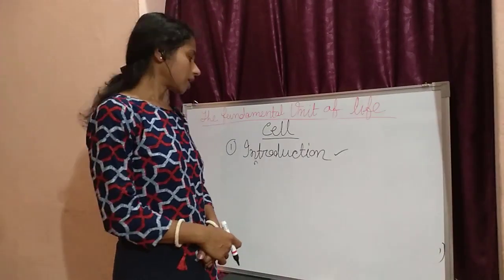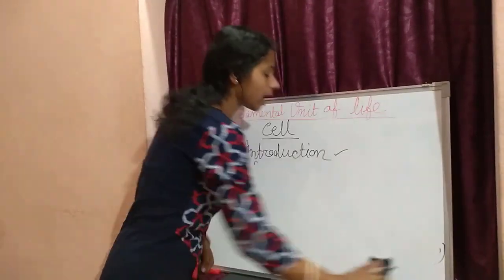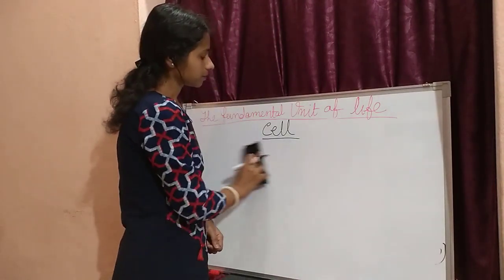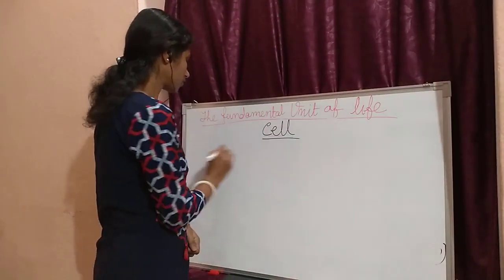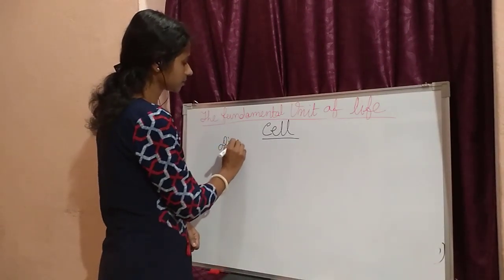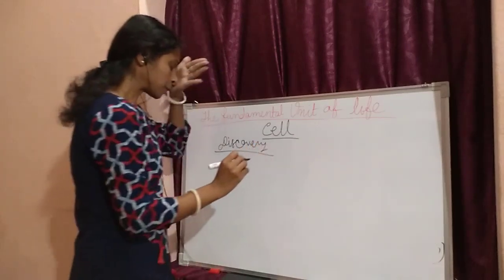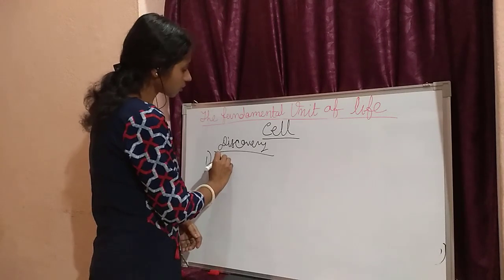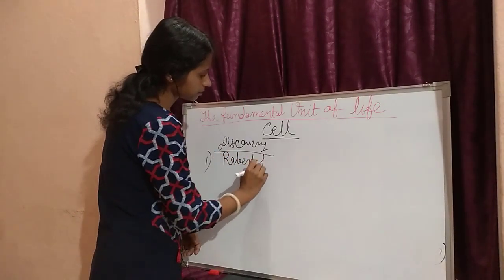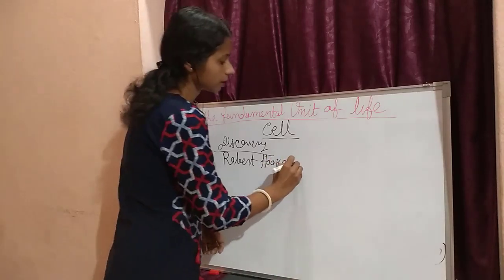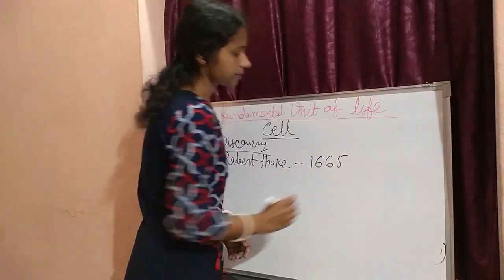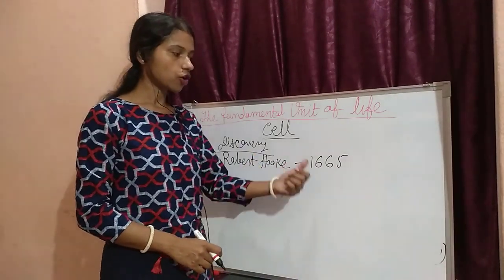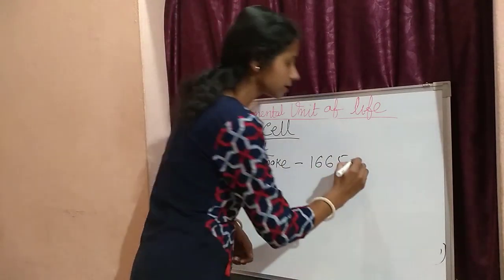Now we will know about who discovered cells and how scientists developed the idea about cells. This is the discovery part. For this discovery, Robert Hooke was the first biologist. In the year 1665, he was the first biologist who first observed cells in cork.